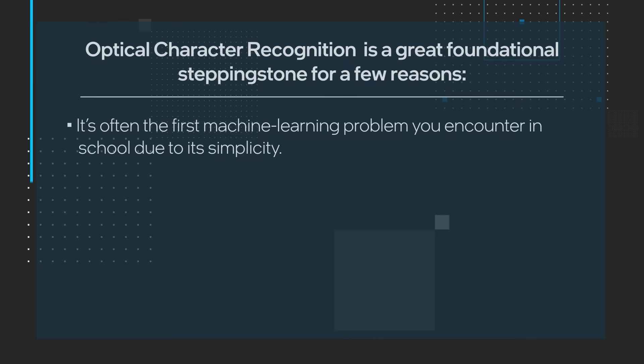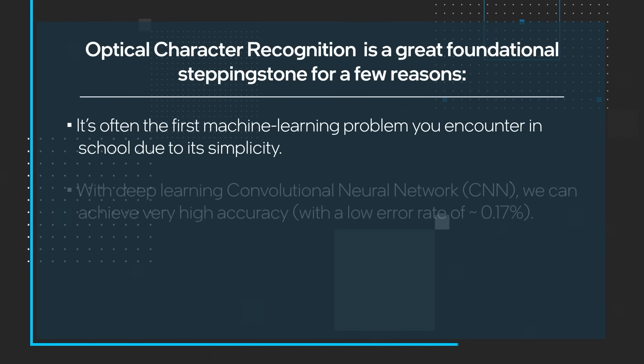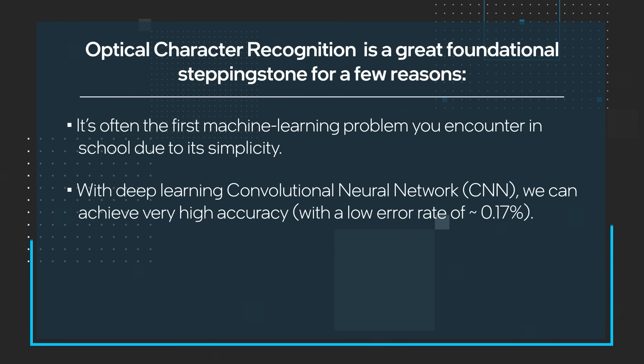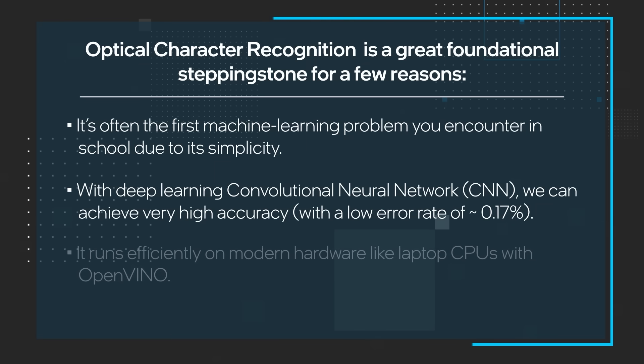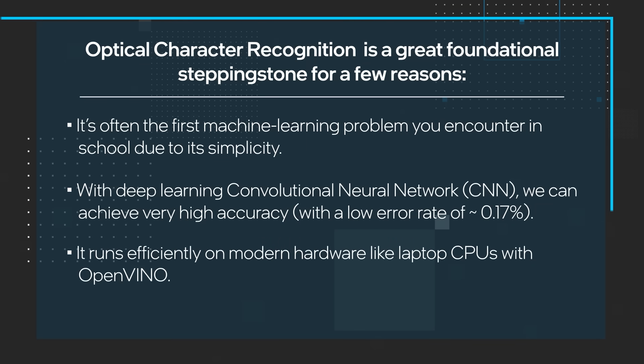Finally, our friend and colleague Raymond Lowe wrote an article about AI inference software fundamentals and getting started with optical character recognition. Optical character recognition, or OCR, is a great foundational stepping stone that is significant for a few reasons. First, it's often the first machine learning problem you encounter in school due to its simplicity. Second, with Deep Learning Convolutional Neural Network, or CNN, we can achieve very high accuracy. And third, it runs efficiently on modern hardware like laptop CPUs with OpenVINO.